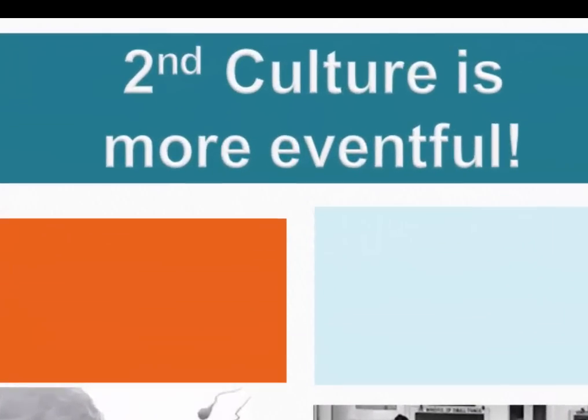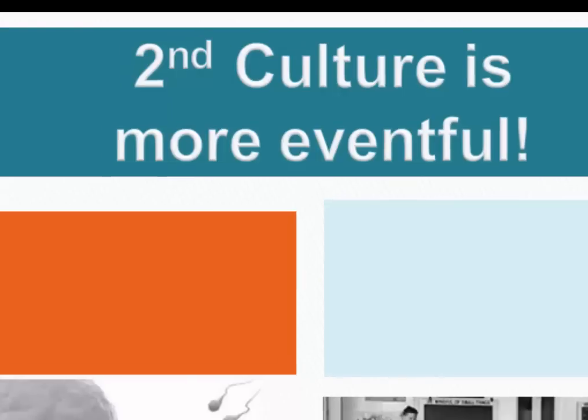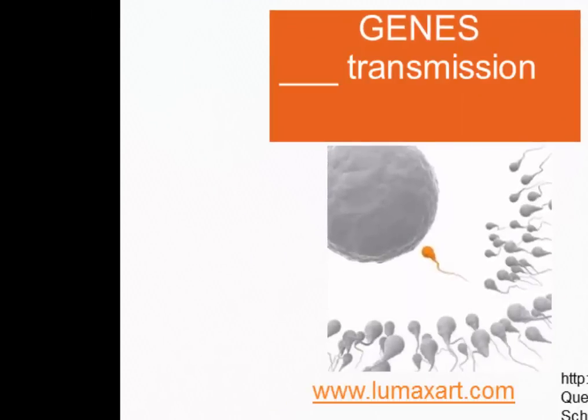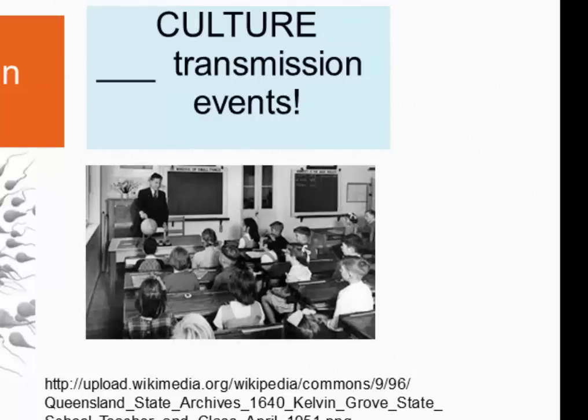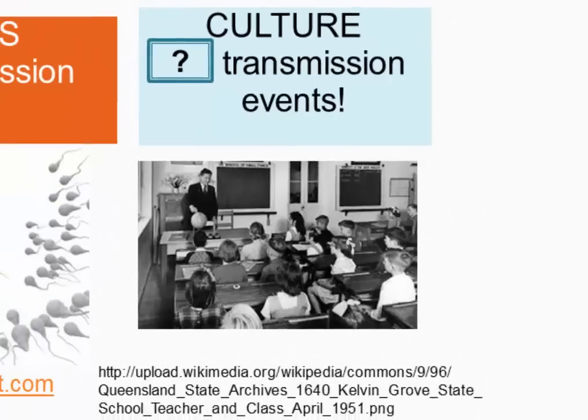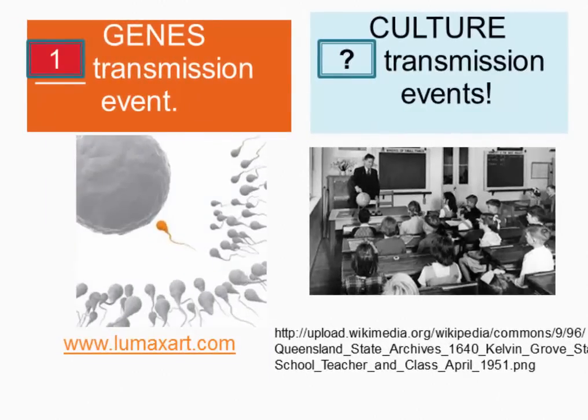The second difference is that culture is more eventful. When we look at genetic transmission, there is only one transmission event: when the sperm meets the egg and forms a new cell called a zygote, and all of the cells in your body descend from that one zygote. But if we look at culture, transmission events are continuous over the length of our life.